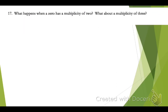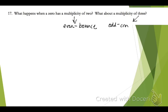When a zero has a multiplicity of 2 — meaning it comes from a factor raised to an even power — the curve will bounce at that point, returning back to the quadrant it came from. If it has a multiplicity of 3, that is an odd power, and the curve of that function is going to cross through that point.